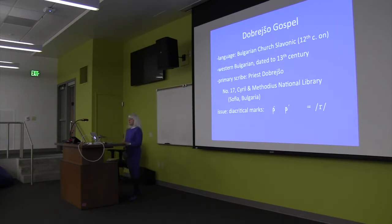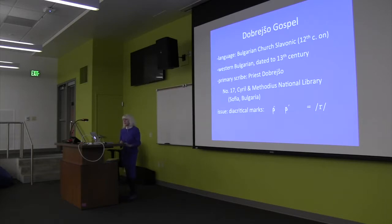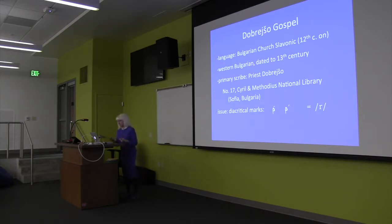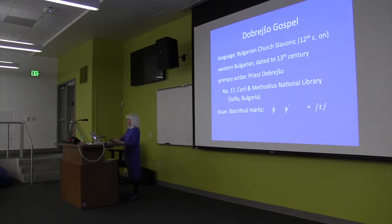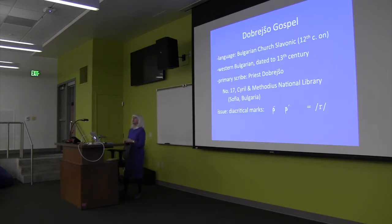An important thing to note is that although the primary scribe is de Bratio, both the Western orthographic features and these marks over the rci letter may not have been initiated by him — he may have simply copied them from his source manuscript. This is something you have to be careful with when dealing with data from written text, because dialect forms and even inadvertent spellings can be copied by generations of scribes and end up in later manuscripts.